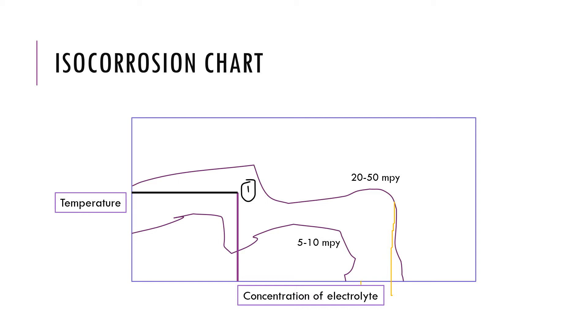...a concentration at around 80 at this temperature and 70 at this temperature and 80 at this temperature, they will still have about 20 to 50 mpy of corrosion rate. It also helps in using the isocorrosion chart for application.